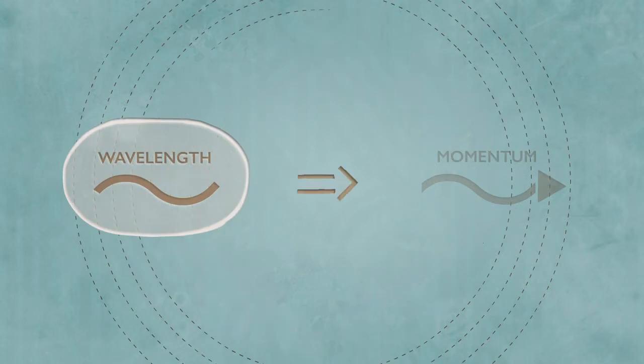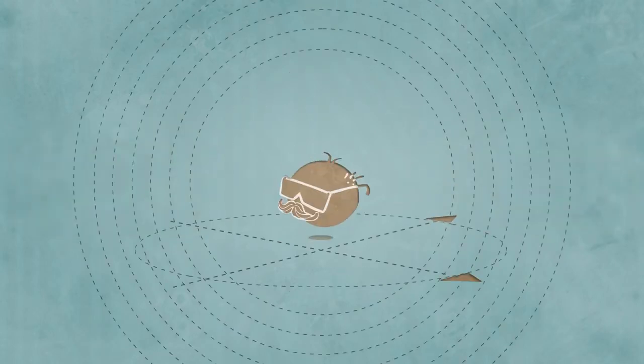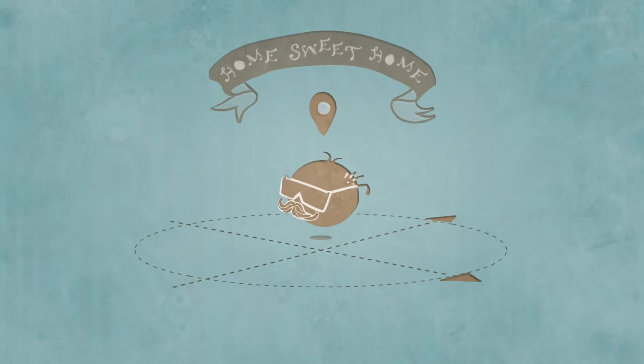So if we have a pure wave, we can measure its wavelength and thus its momentum, but it has no position. We can know a particle's position very well, but it doesn't have a wavelength, so we don't know its momentum.